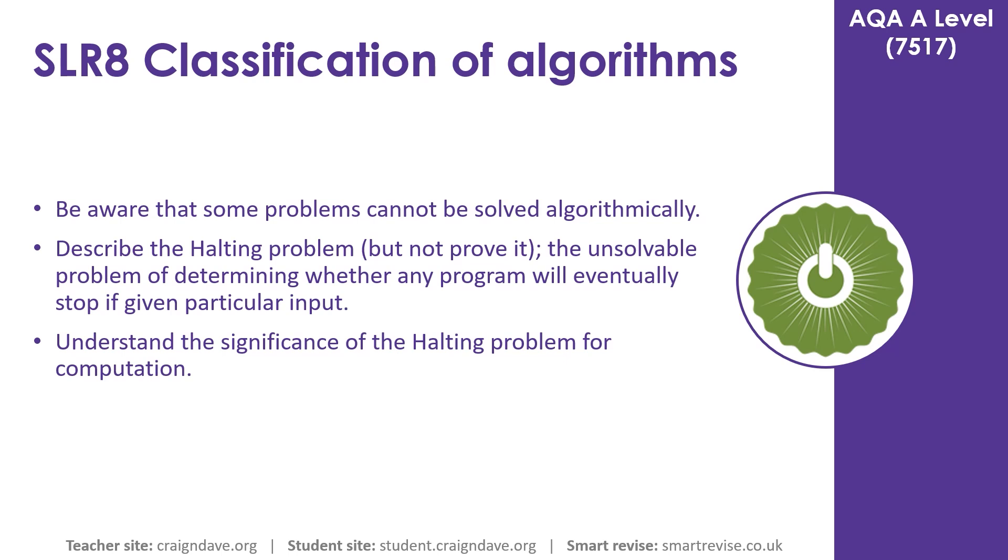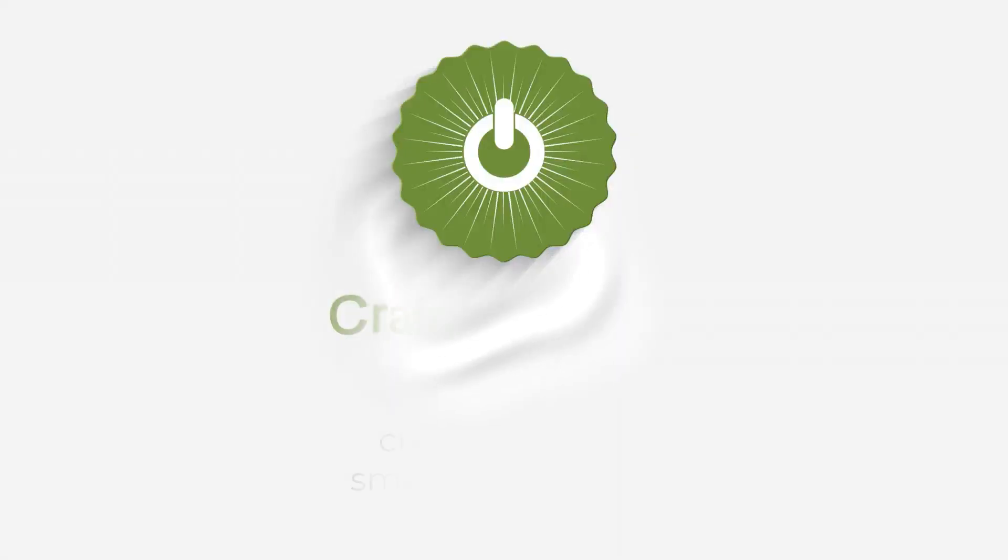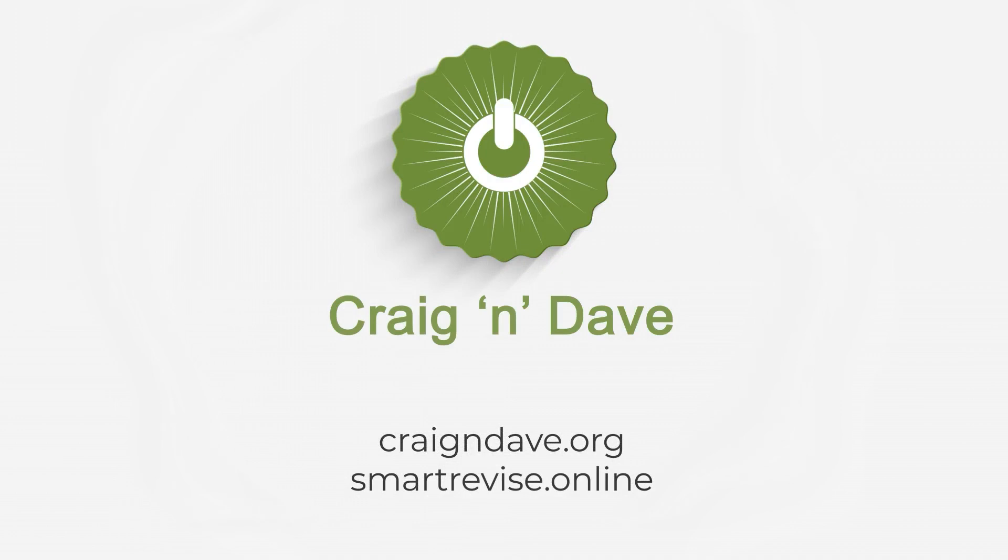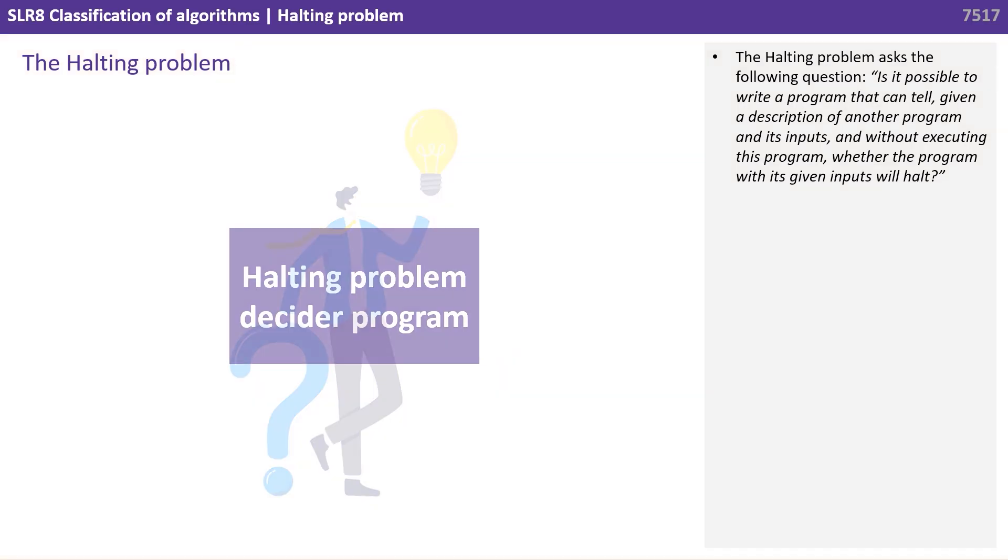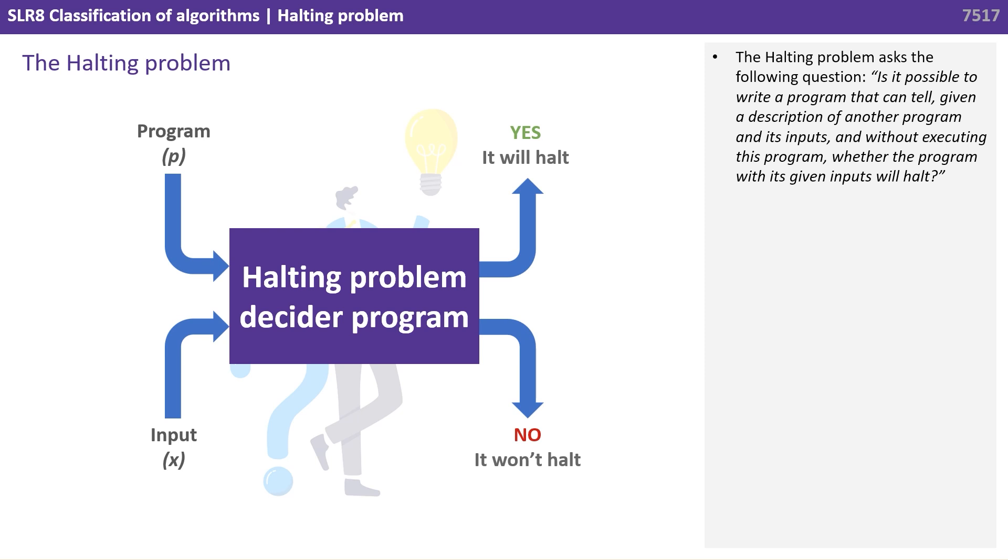In this video, we discuss the halting problem. The halting problem asks the following question: Is it possible, in general, to write a program that can tell, given a description of another program and its inputs, and without executing this program, whether the given program with its given inputs will halt?